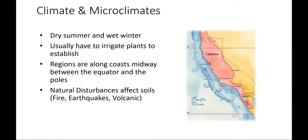Another interesting characteristic of Mediterranean climates is that they're typically quite prone to fire, earthquakes, and volcanic activity. We know this to be true of the California Mediterranean region, the Mediterranean basin, southwestern Australia, South Africa, and Chile — these are all inherent characteristics within Mediterranean regions.